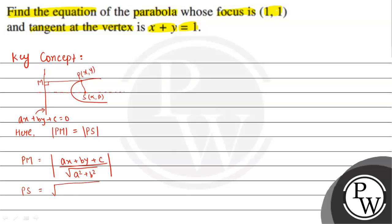We will use the distance formula and we will get x minus alpha whole square plus y minus beta whole square for PS. Point A is the vertex of the parabola, and Z is the foot of the perpendicular from focus to directrix. The key concept is that A is the midpoint of Z and S.